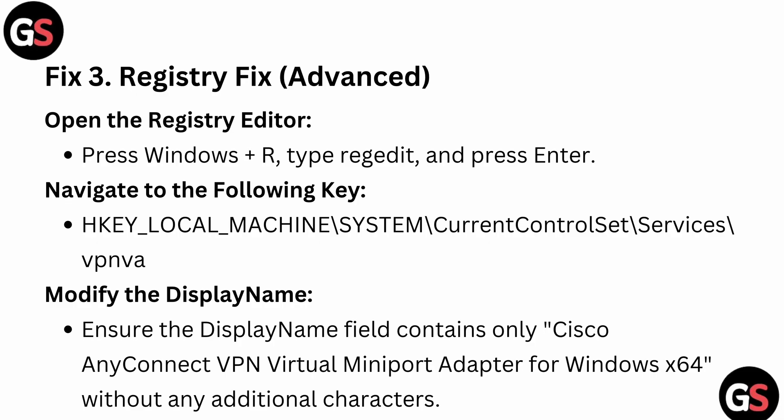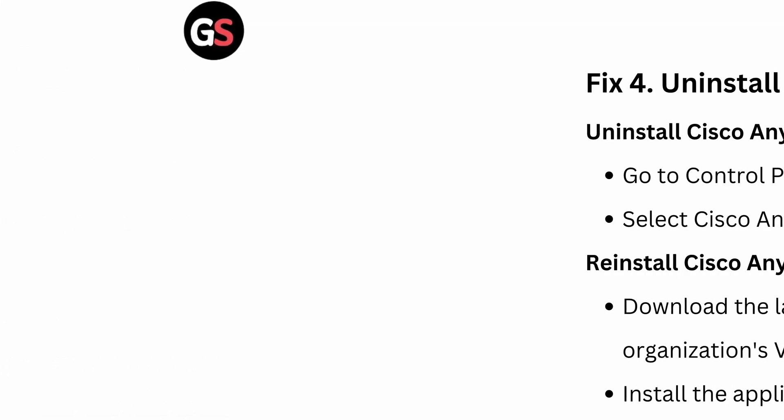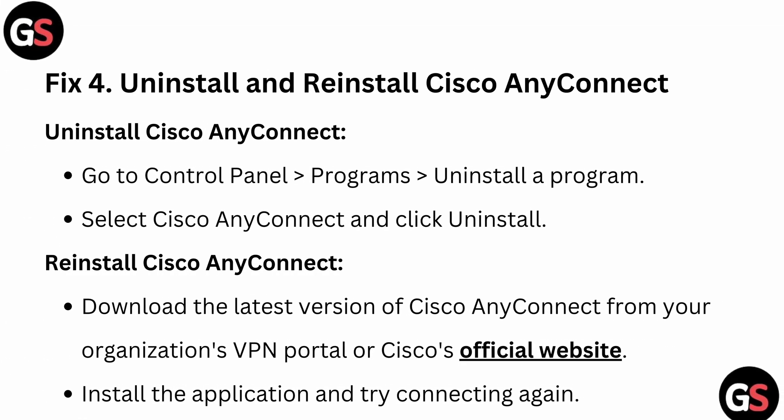To open the Registry Editor, press Windows + R, type 'regedit', and press Enter. Navigate to the following key: HKEY_LOCAL_MACHINE > SYSTEM > CurrentControlSet > Services, then select 'vpnva'. Modify the Display Name field and ensure it contains only 'Cisco AnyConnect VPN Virtual Miniport Adapter for Windows' without any additional characters.